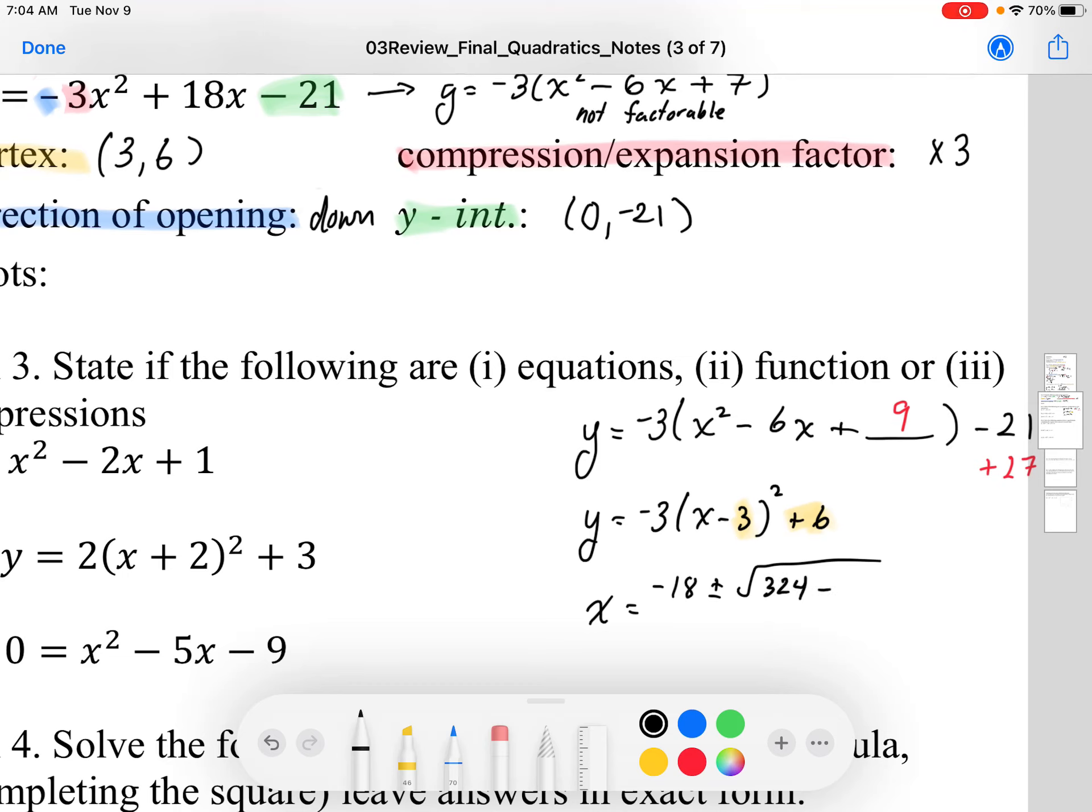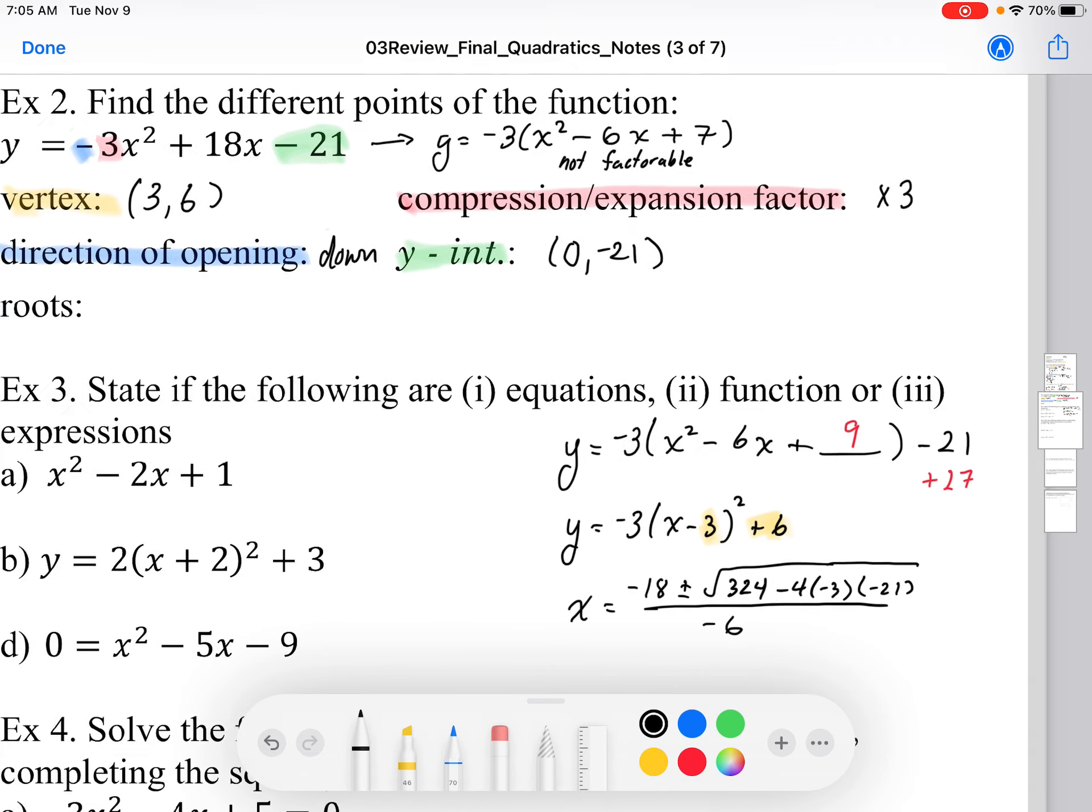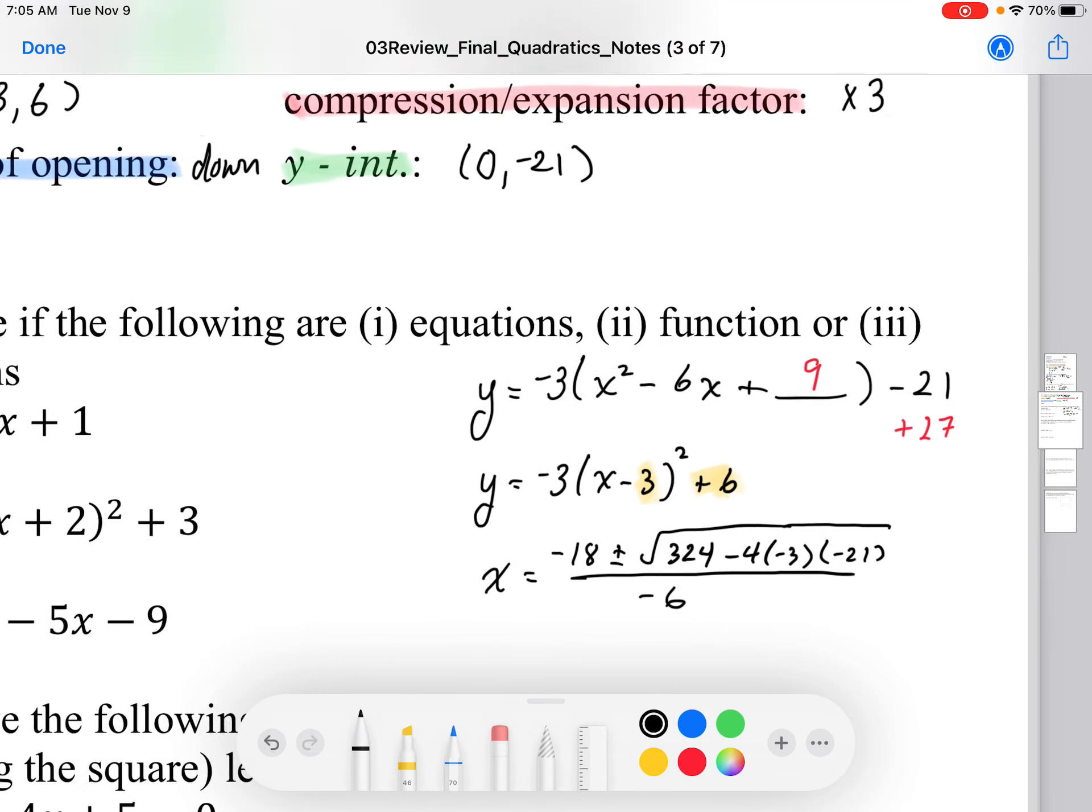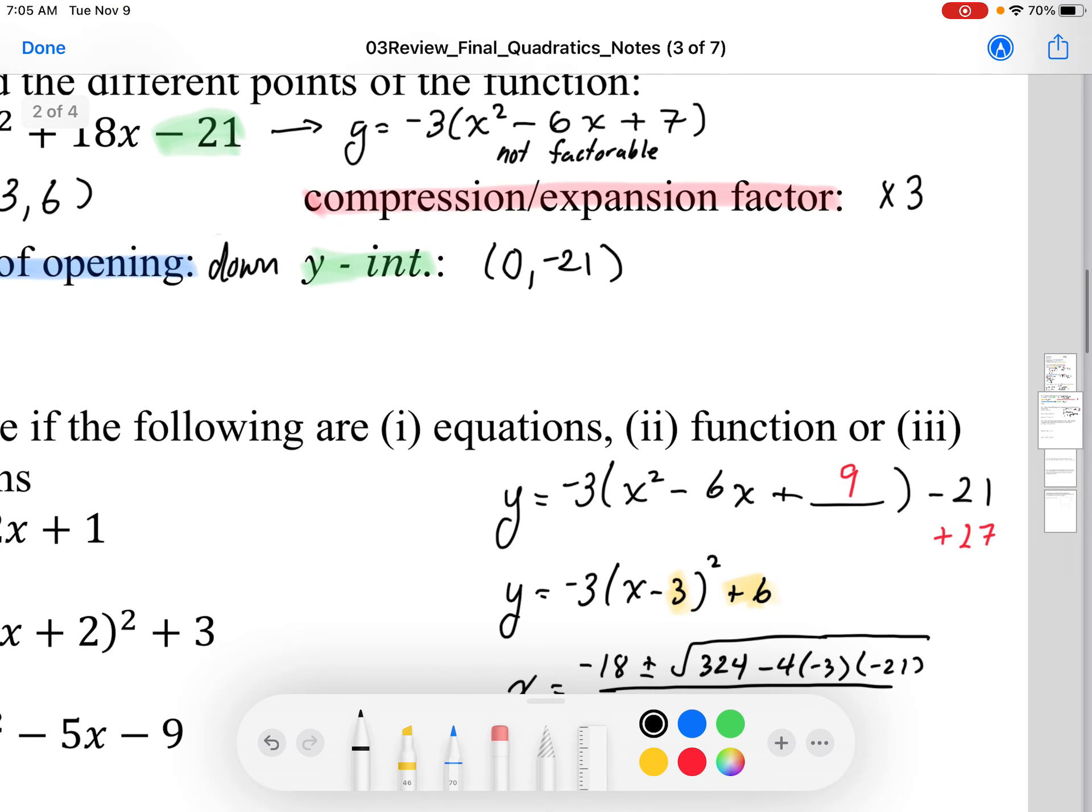324 - 4 times a, which is -3, times -21. And that's all over 2a, so -6. Now, we used the quadratic formula on the original equation, but we could have used it on the factored, we could have factored the -3 out. And we could have used that form to be able to put into the quadratic formula.